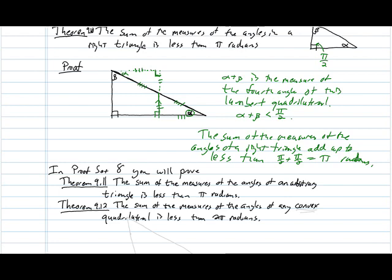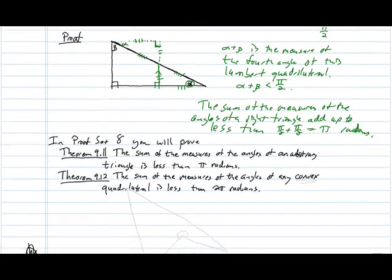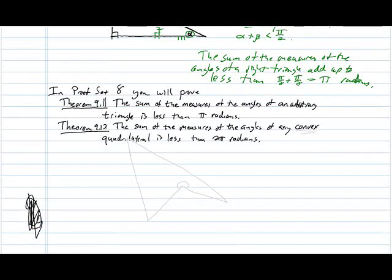Okay. Now, in proof set eight, I'm leaving a couple proofs for you. You are going to extend this result to all triangles rather than just right triangles. And then you're going to use that result to prove that the sum of the measures of any convex quadrilateral is less than 2 pi radians.